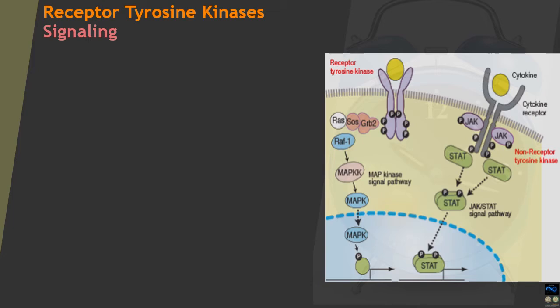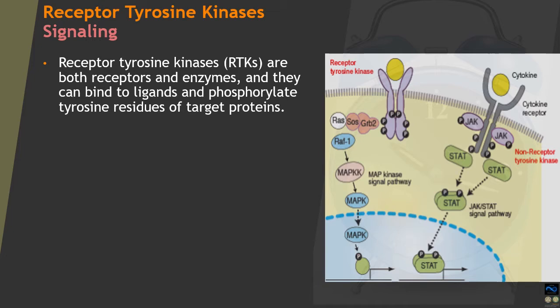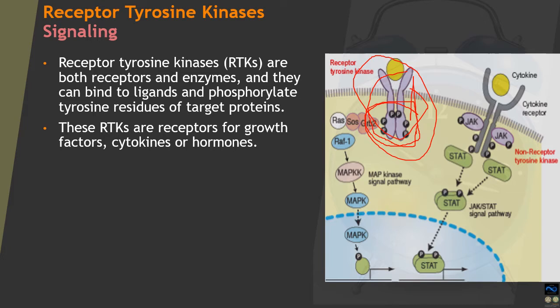We'll be focusing mainly on receptor tyrosine kinases. RTKs are receptors located on the exterior surface of the cell; they bind to the ligand and behave both as receptors and as enzymes. Their enzymatic activity is the phosphorylating capability — they phosphorylate specific tyrosine residues located on the internal part of the receptor after binding to the ligand, causing phosphorylation of their own internal motifs for relay of information.